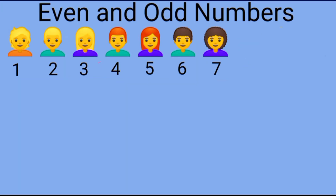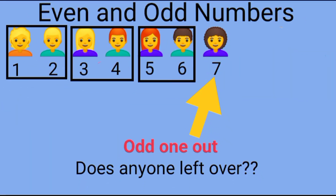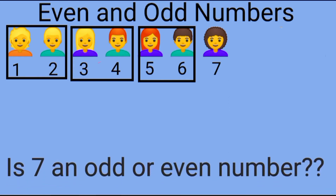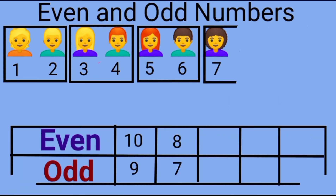Now let us see what would happen if there were seven students in the class. Let us pair up all the seven students. Have all the students been paired up? Not all the students have been paired up, because one student will be left over without a partner for the number seven. So is the number seven an odd or even number? Yes, seven is an odd number.